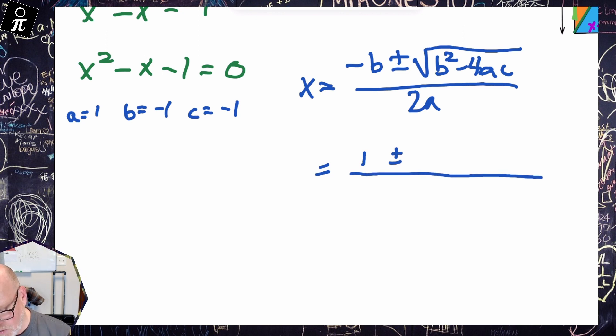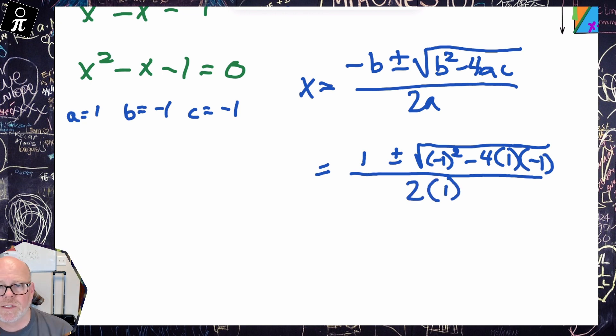Okay, so then it's going to be negative one squared minus four times A, which is one, times C, which is negative one, all over two times one, which is two.